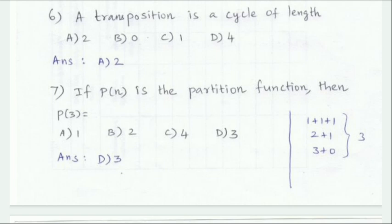If p is the partition function, then p(3) — the value is found by listing all partitions of 3: 1+1+1, 2+1, and 3+0. So there are 3 partitions, giving p(3) = 3.